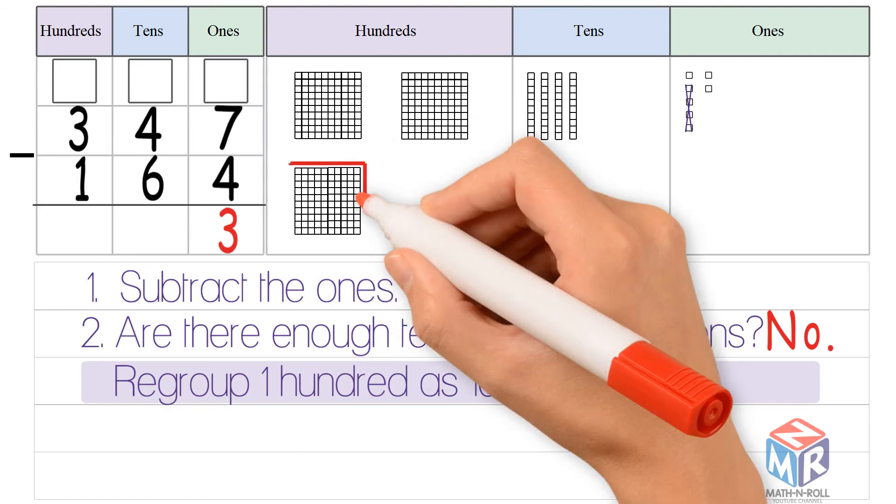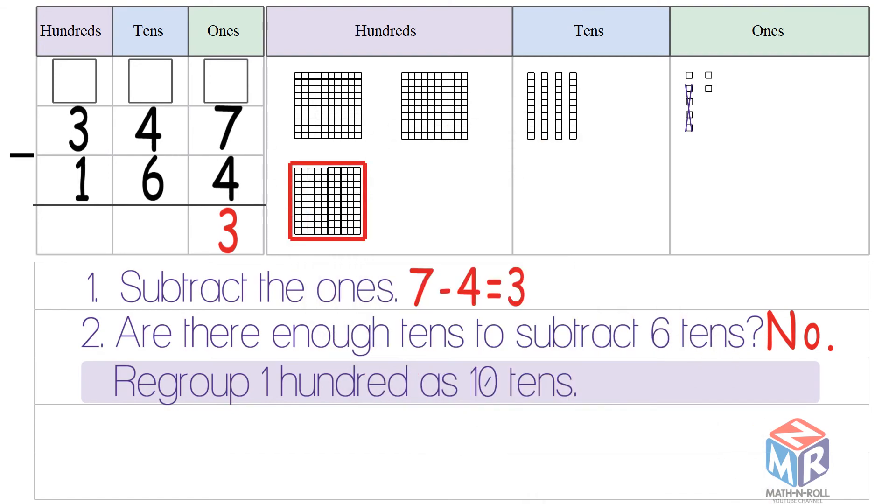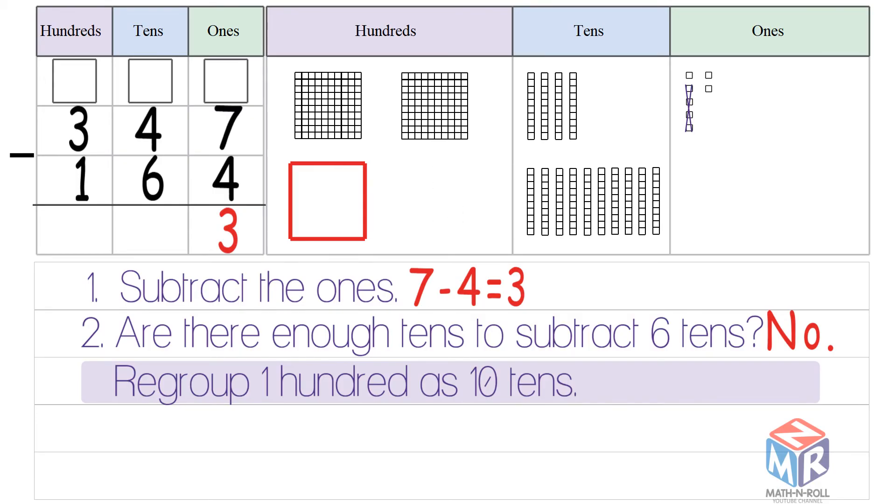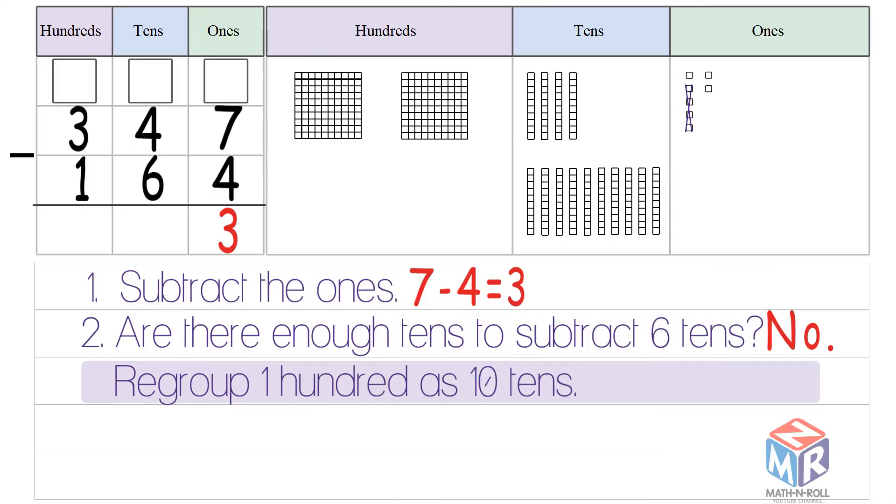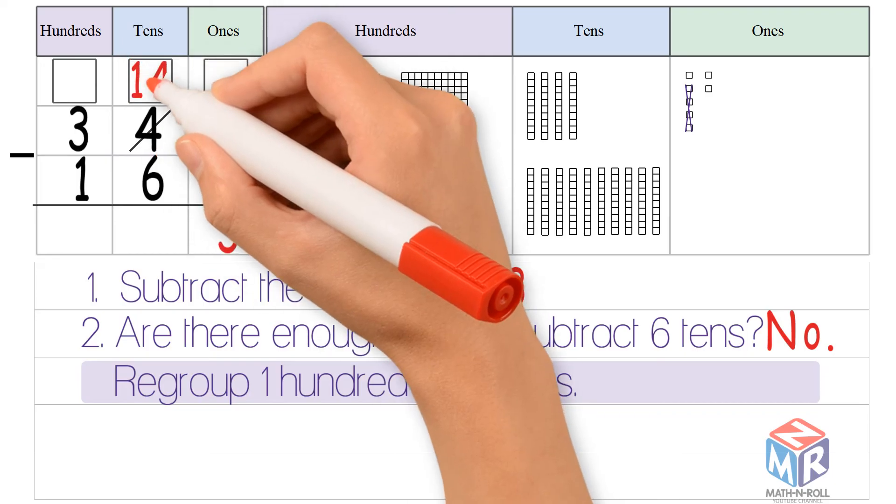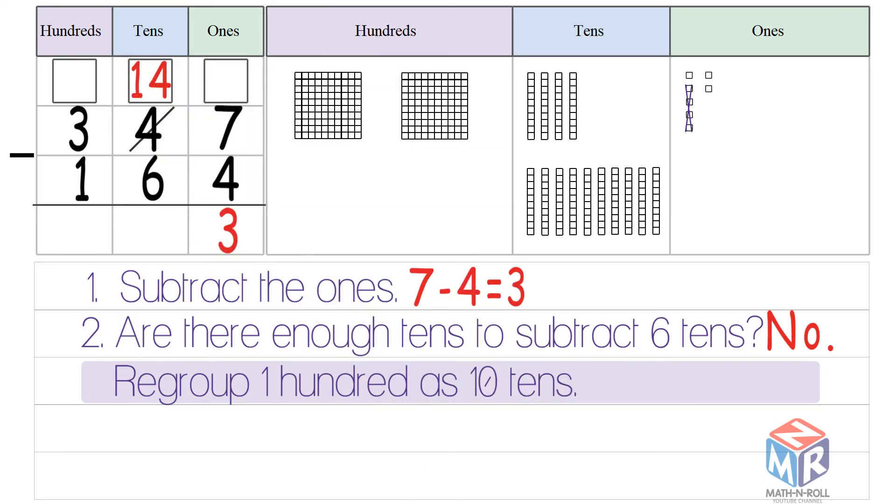So we regroup 100 as 10 tens. Now we have 14 tens. Now we have 14 tens and 2 hundreds.